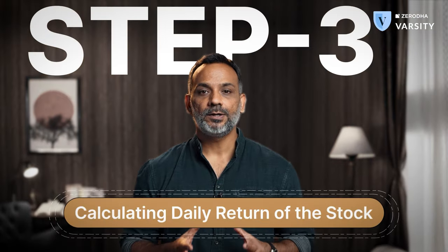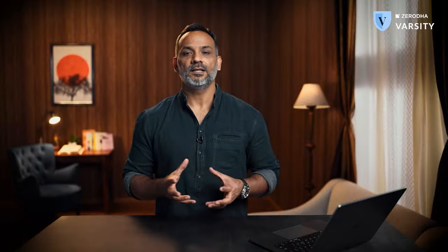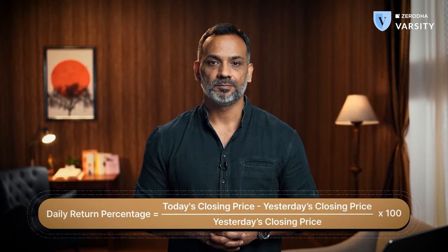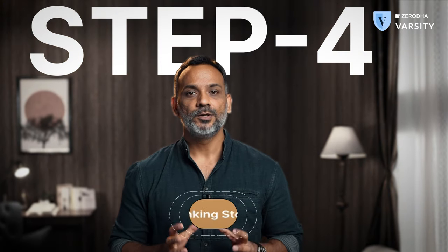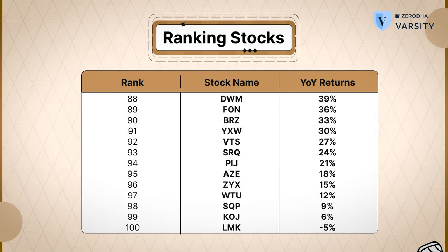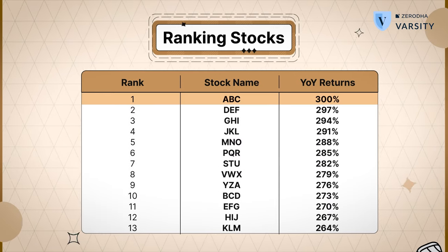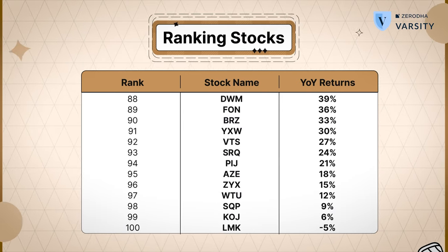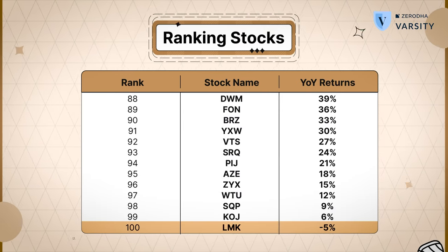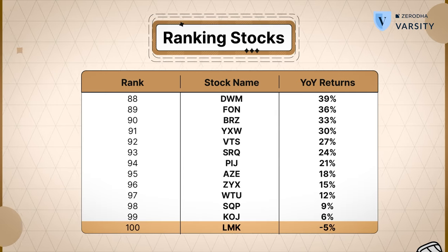In Step 3, you need to calculate the daily returns of the stock. Calculating daily returns is a fairly straightforward affair — here is the formula to do that. Step 4 is important: you will rank all the stocks in your tracking universe. For example, if you have 100 stocks, rank 1 will be for the stock which has generated the highest return on a yearly basis, and rank 100 will be for the stock which has generated the least return. What you've essentially done is rank all the stocks based on the momentum they have displayed on a yearly basis.